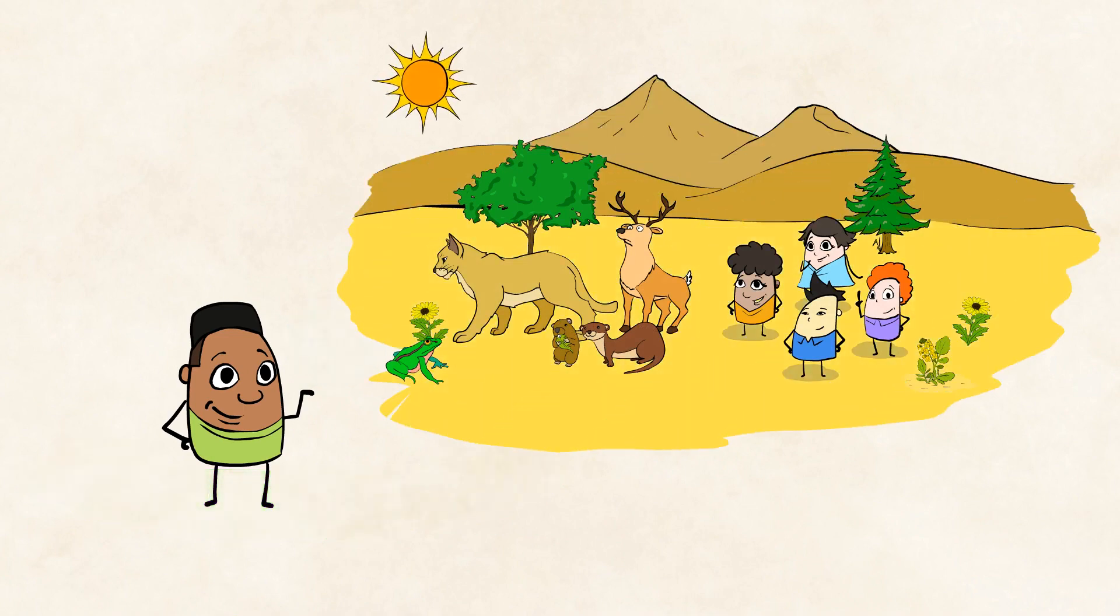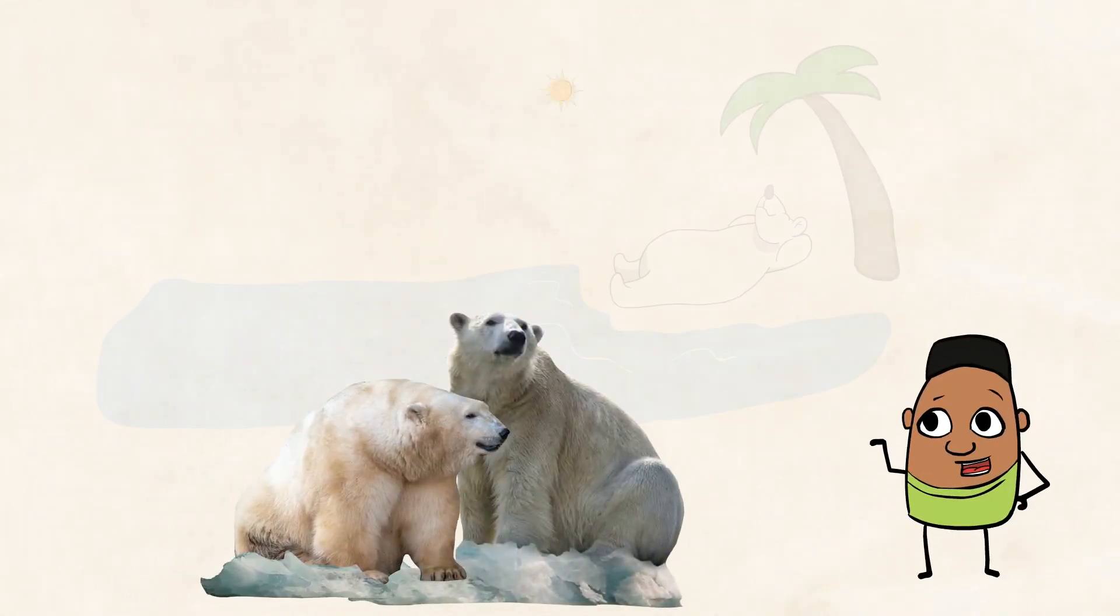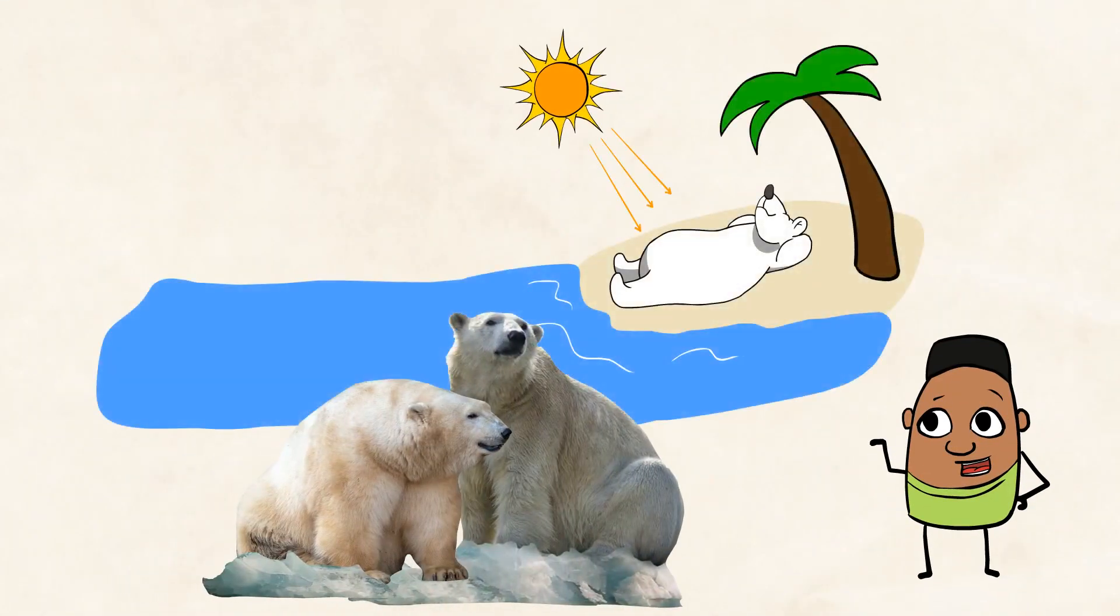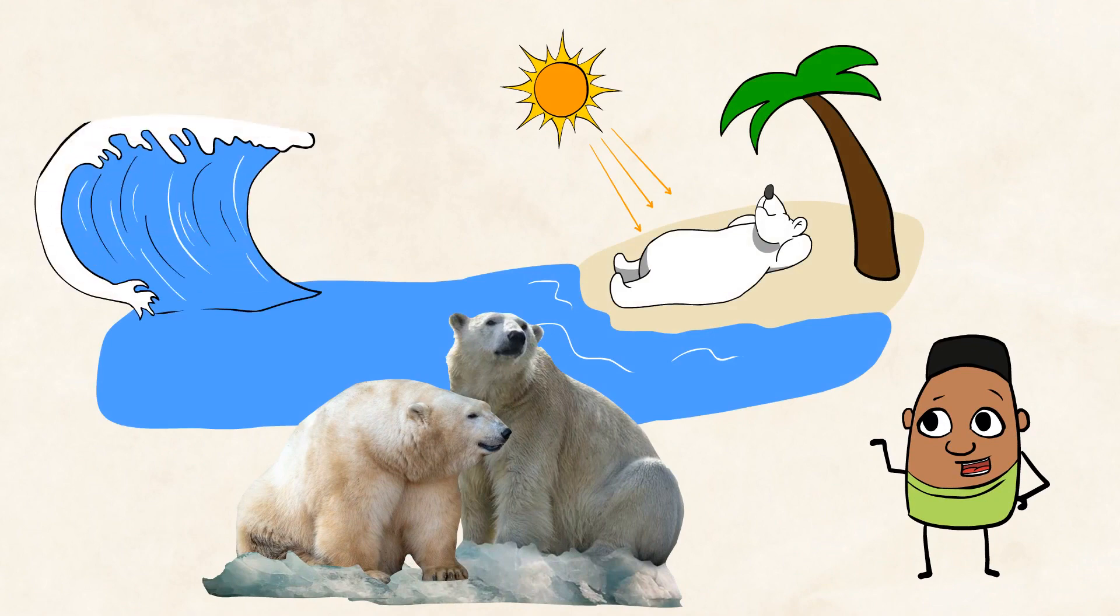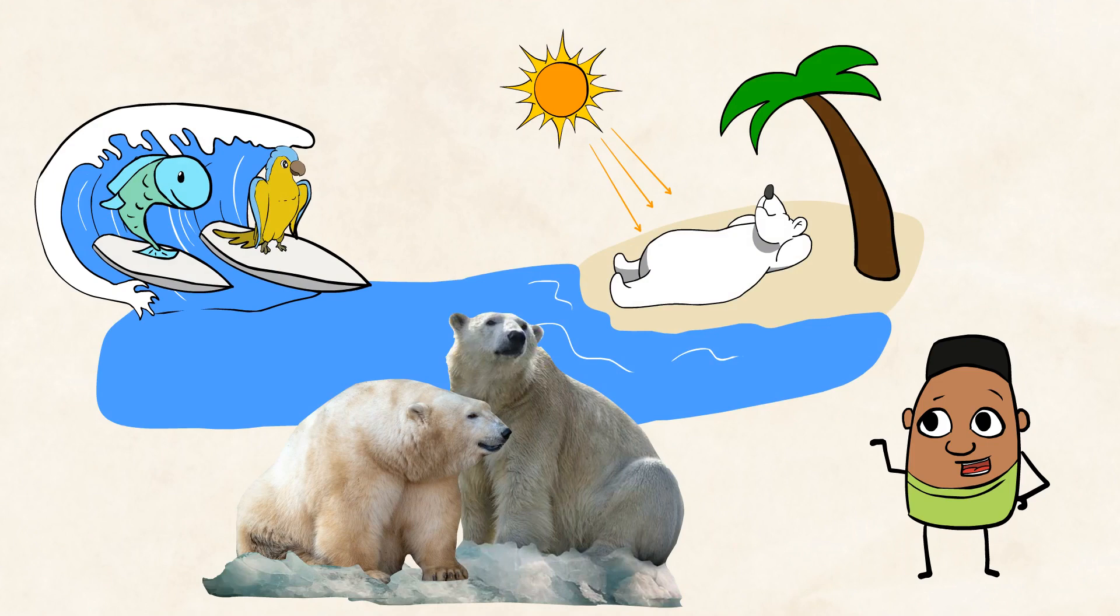Like the desert. Kind of funny to picture that in your mind, isn't it? Or imagine a polar bear sunbathing next to the ocean, or picture a beach with a fish surfing with his best friend, a macaw, as a palm tree happily sways in the ocean breeze. Okay, okay, we know this can't be true.